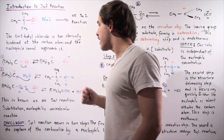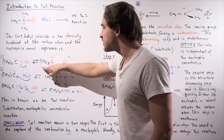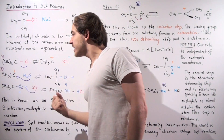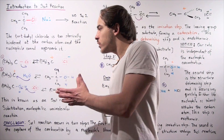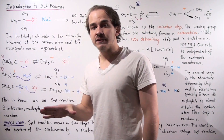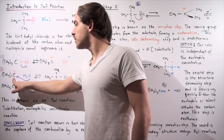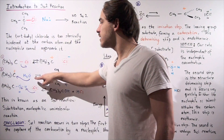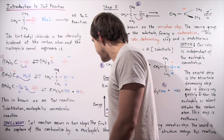In the second step, once our carbocation is formed, a water molecule or some nucleophile — if present — can attack and capture this carbon. A lone pair of electrons on our water molecule attacks this carbon, forming the following intermediate.